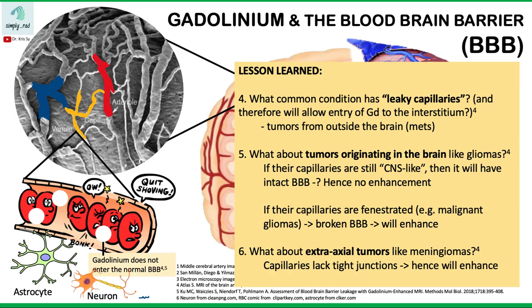How about extra-axial tumors like meningiomas? Meningiomas originate from the arachnoid cap cells, and these tumors would have capillaries which do not have tight endothelial cell junctions. Therefore, if they lack tight junctions, these tumors will enhance avidly.